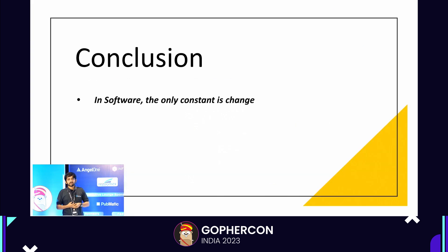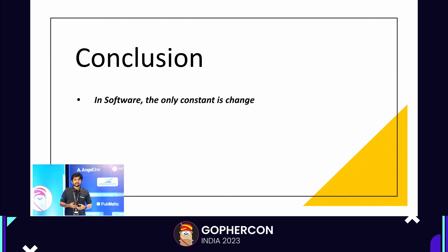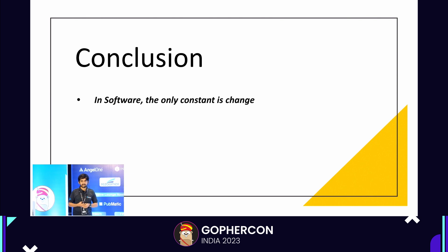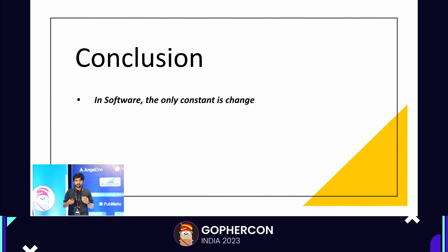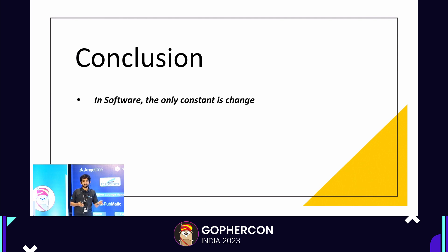In short, I would like to conclude by saying that each and every software goes through its own maturity lifecycle and has its own evolution story. There is no single silver bullet that fits all needs. The tools and design you pick are dependent on the maturity level of your software as well as the magnitude of the problem you're trying to solve. And to quote: in software, the only constant is change — apart from the constants in your codebase, obviously. Thank you.